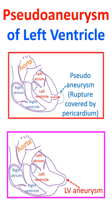Pseudoaneurysm of the left ventricle is a contained ventricular rupture with the wall of the pseudoaneurysm composed of pericardium. A true aneurysm has all three layers of the heart — endocardium, myocardium, and pericardium — and has a relatively wide neck, while a pseudoaneurysm has a narrow neck.